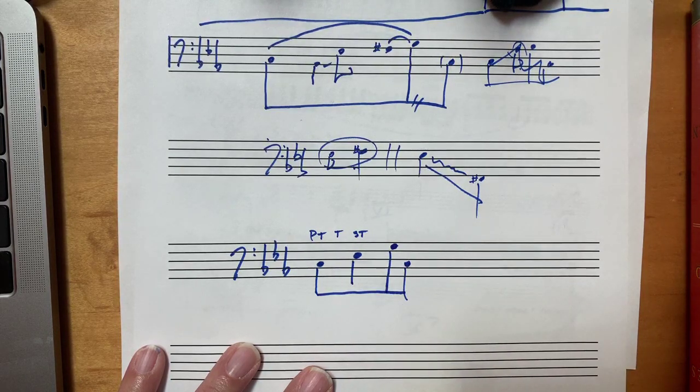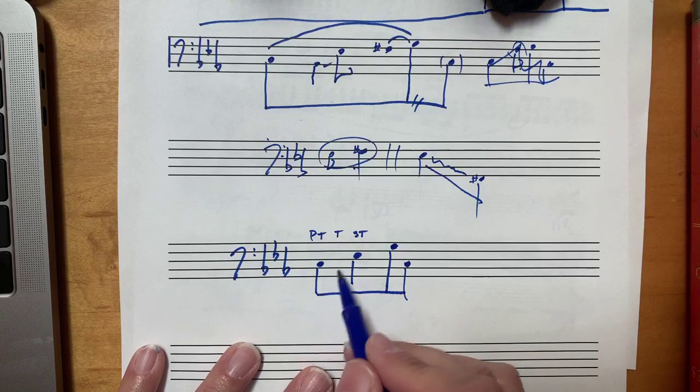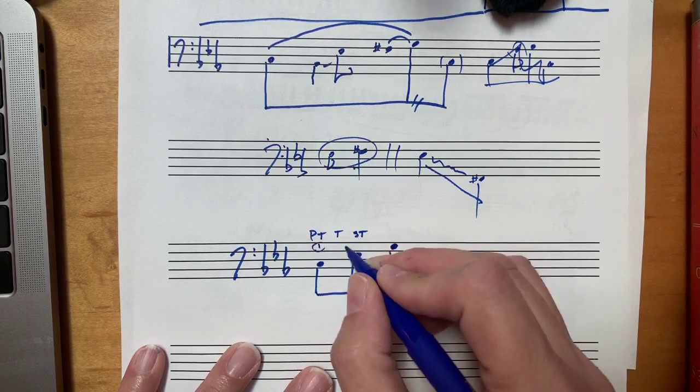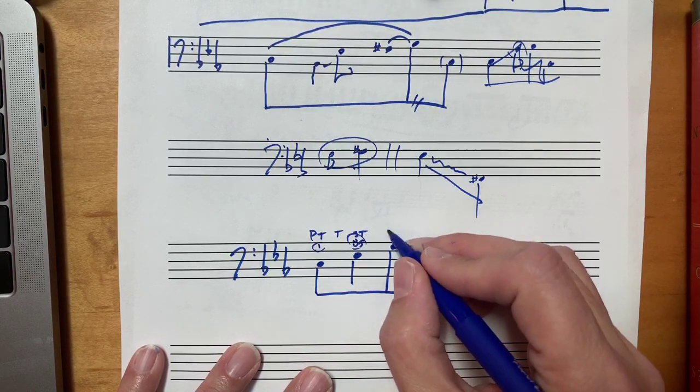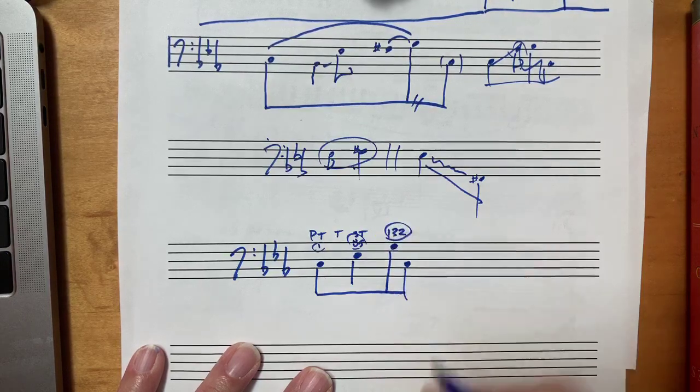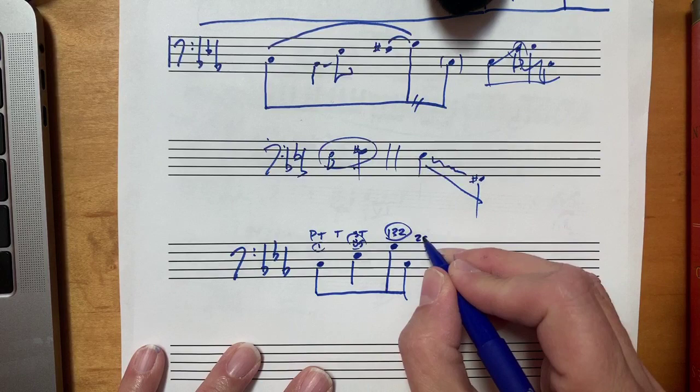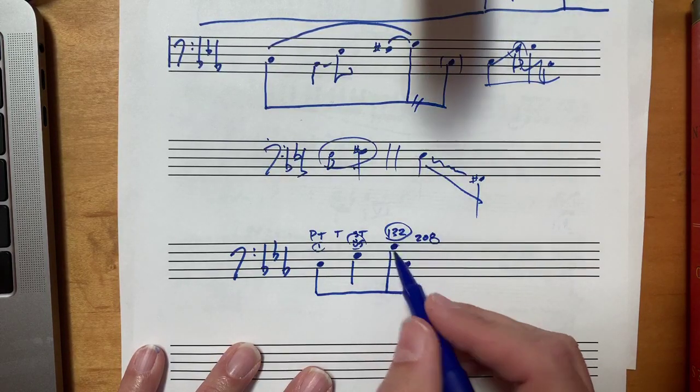And then towards the end of the development, you get the structural dominant, and then the entire recapitulation is in the tonic key. So if you map out the measures of the whole movement, you find out, to make up some measures, like this is measure one, this is measure 85, this is measure 132. These measures are not accurate, I'm just giving you a for instance of what they might be in 208.